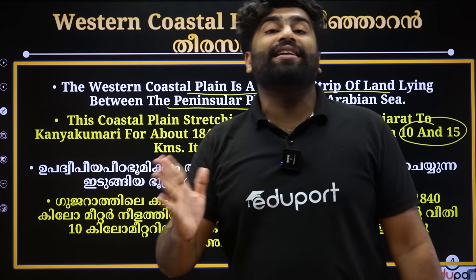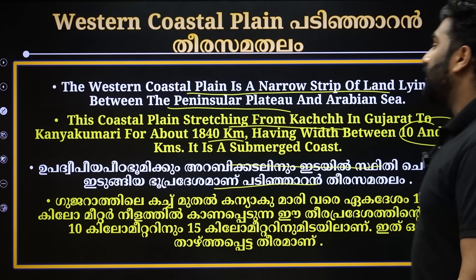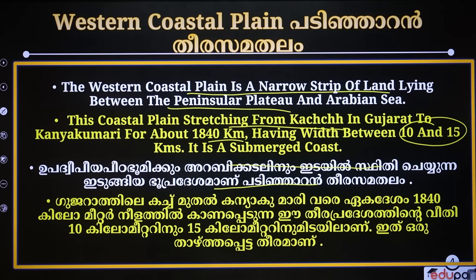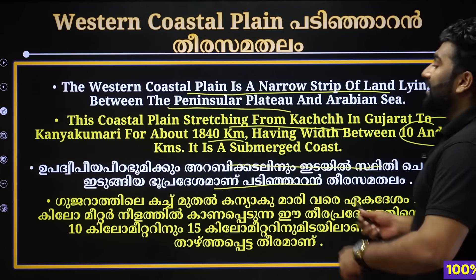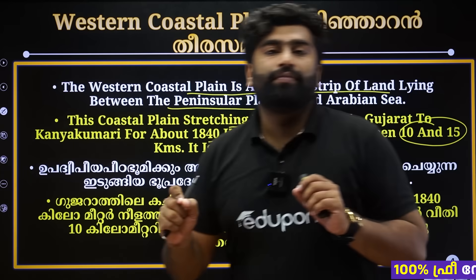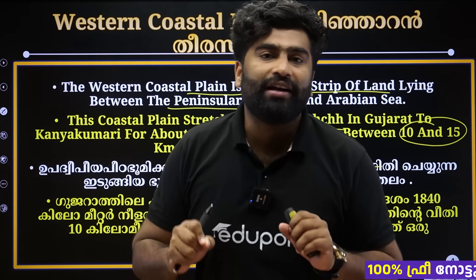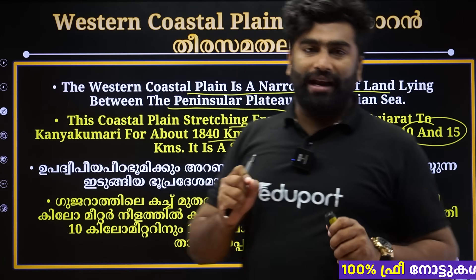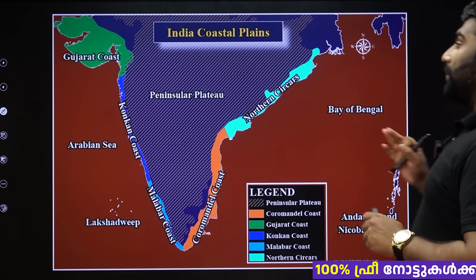From Kachcha to Kanyakumari the distance is 1840 km. This lies between the Western Ghats and the Arabian Sea. It is also called Paschima Kattad. There are three subdivisions.